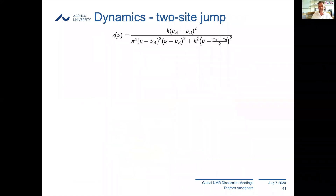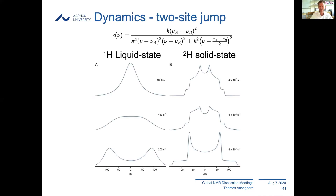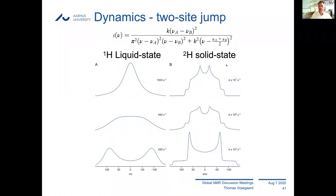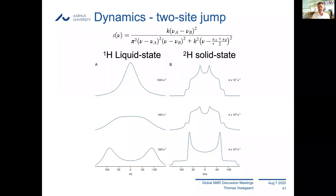Finally, in papers you sometimes find funny lineshapes - like the classical exchange lineshape given by the two-site exchange model, or the three-state rotation relevant to methyl groups, or deuterium exchange with two different quadrupole frequencies. Whether it's a simple liquid-state NMR spectrum or solid-state dynamics, the same lineshape formalism applies. You can implement this part in SIMPSON and use SIMPSON's internal Hamiltonian to calculate the frequencies νA and νB, making it relatively easy to simulate these dynamics lineshapes.